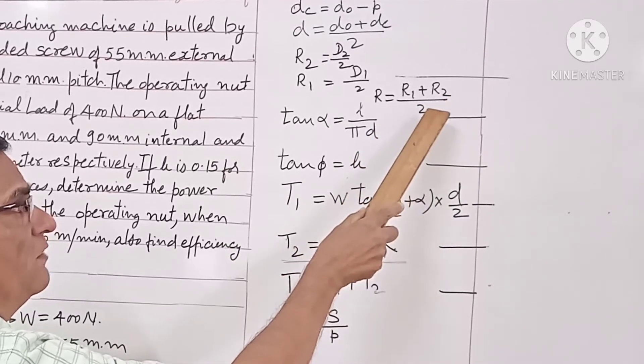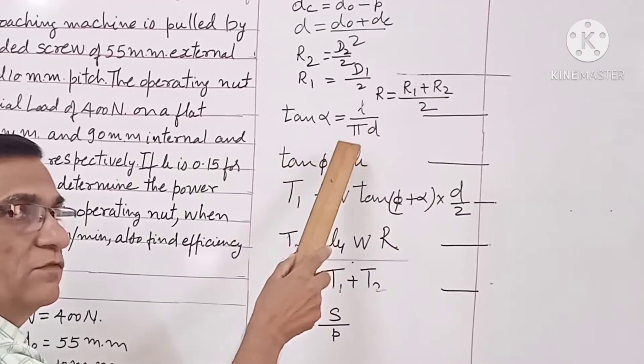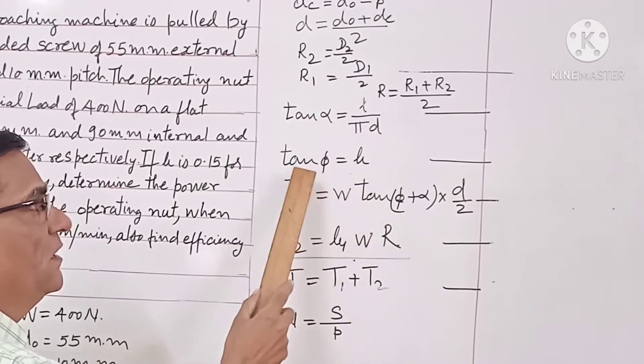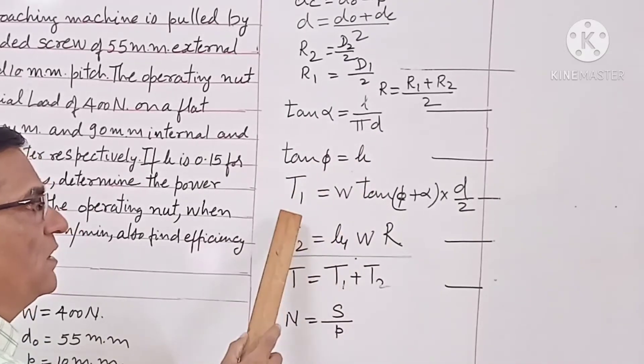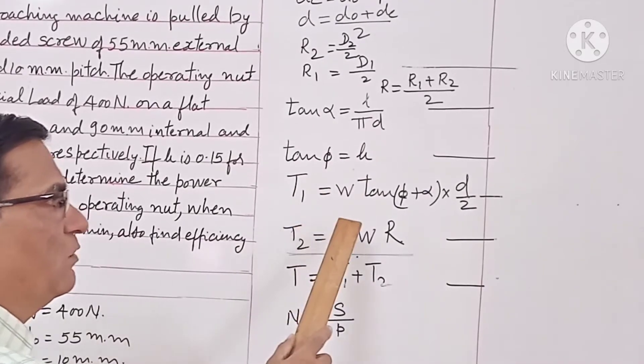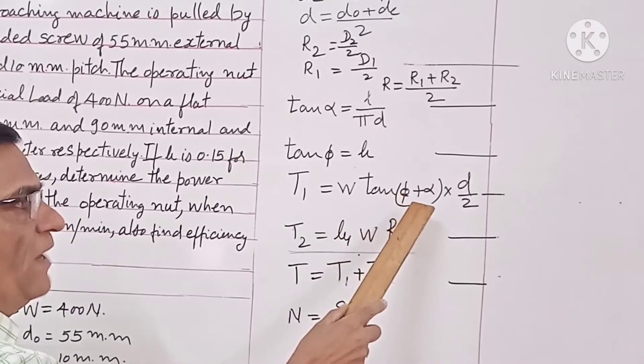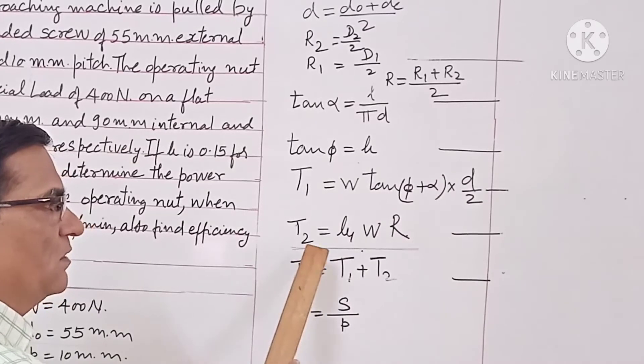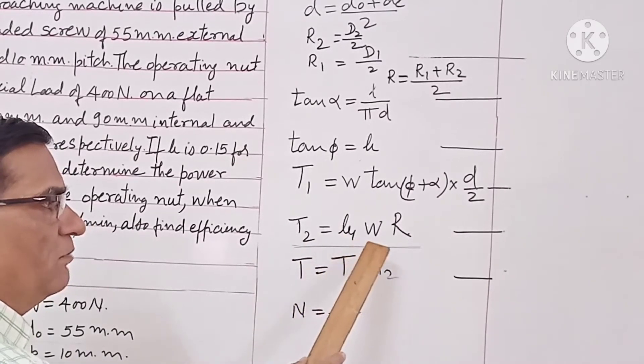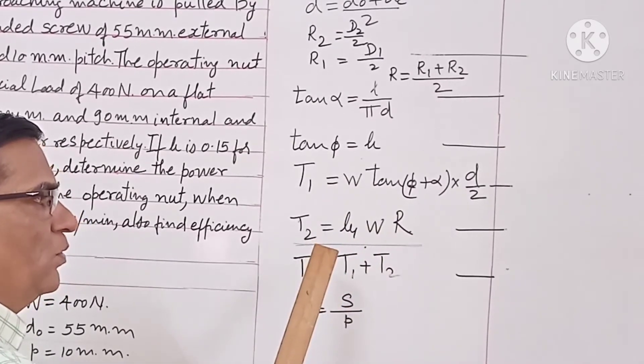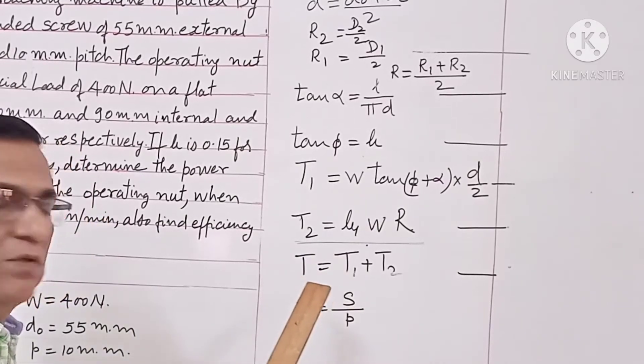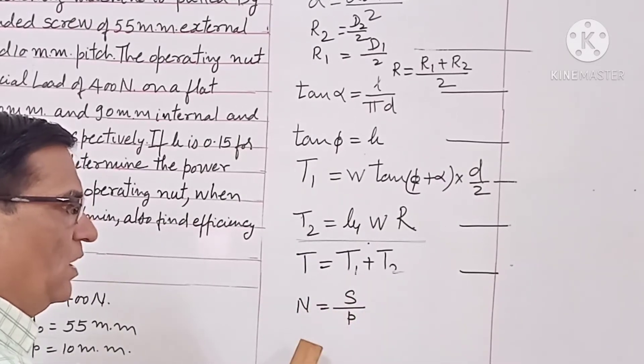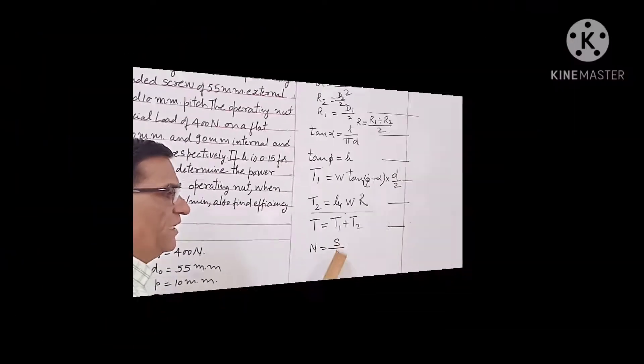Mean collar radius Rc is equal to R1 plus R2 by 2. Using this formula we will calculate core diameter that comes out to be 40 mm. From this formula we will calculate